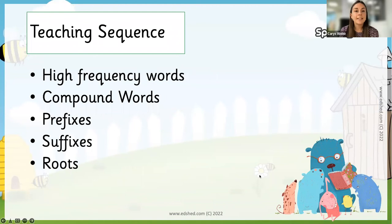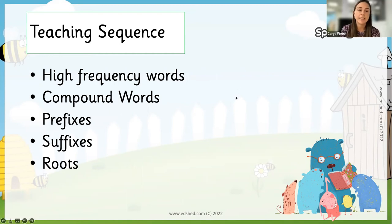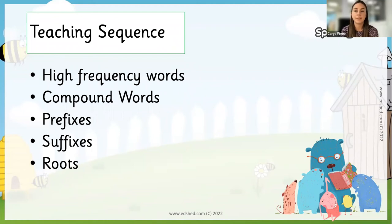Here is a suggested teaching sequence from Rob's research. Many start with teaching some basic high-frequency words, as they come up in about 50% of everything we read and write. Then moving on to compound words, then prefixes, suffixes, and root words, which all interlink. This can be spiralised throughout the primary sector, with sections revisited as words get more difficult and vocabulary expands as children go up the school.